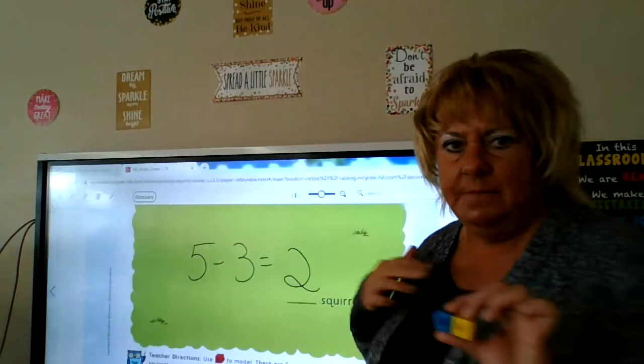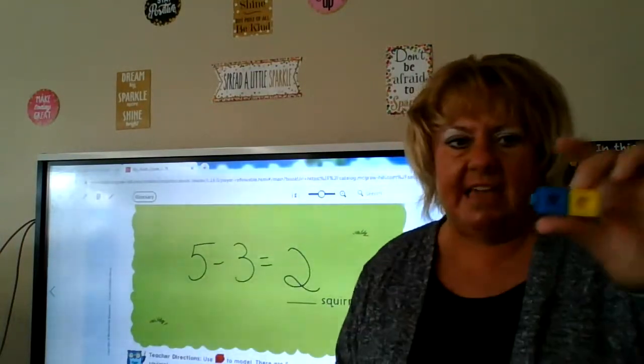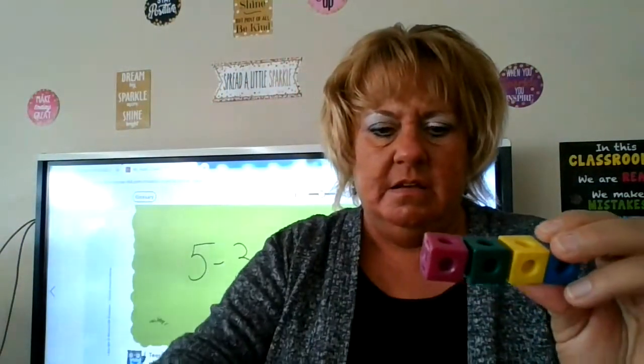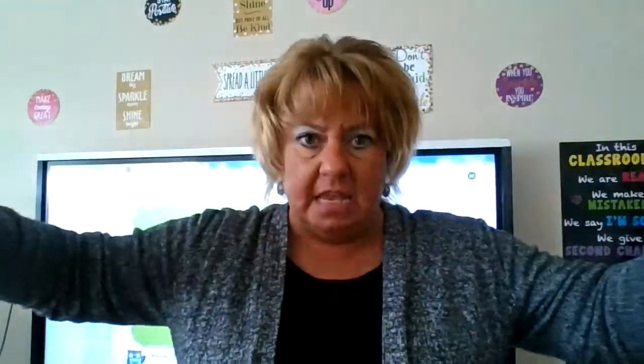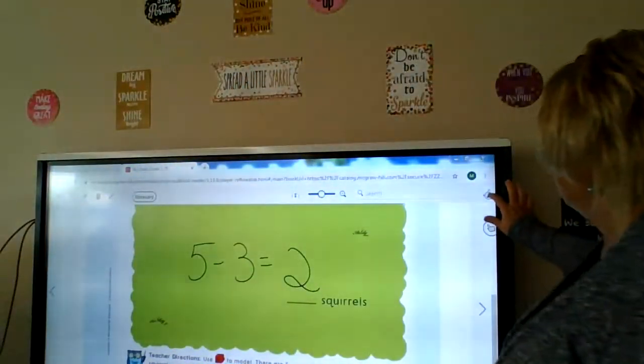There are five squirrels playing; three of the squirrels run away — how many are still playing? Five minus three is two. How can we check that? Is 2 plus 3 equal to 5? Yes! So subtraction is taking the whole and making two parts; addition is taking two parts and making a whole. The answer to an addition problem is called a sum; the answer to a subtraction problem is called the difference.